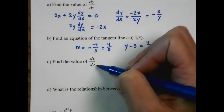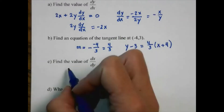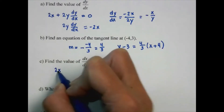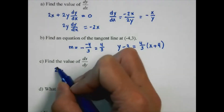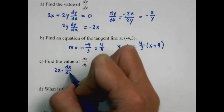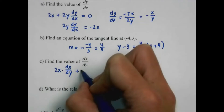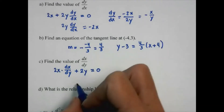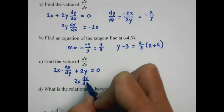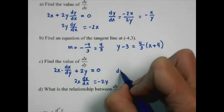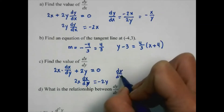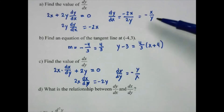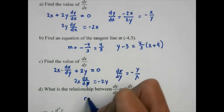Now we're going to do the same thing, but this is flipped: dx/dy, the derivative with respect to y. We're still dealing with x squared plus y squared equals 25. So it's going to be 2x times dx/dy plus 2y times 1 equals 0. Solving: 2x dx/dy equals negative 2y, so dx/dy is negative y over x. The relationship between dy/dx and dx/dy — we've got negative x over y and negative y over x — which makes them reciprocals.